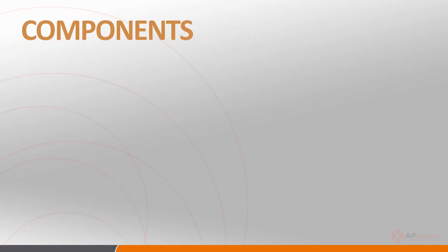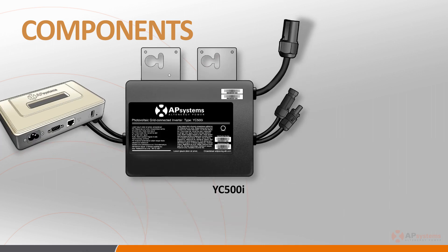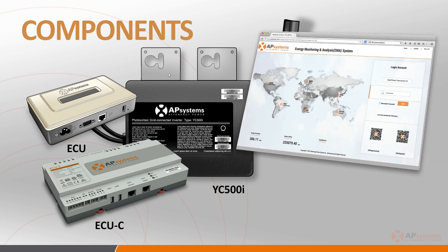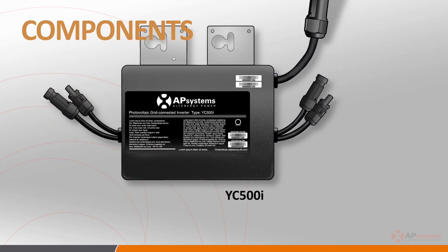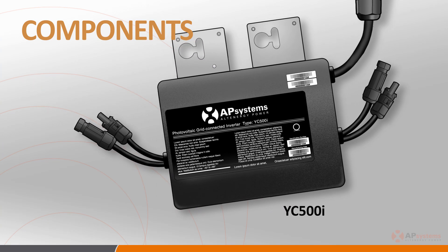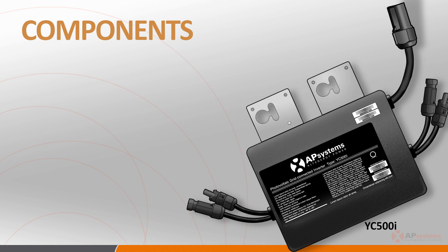There are three basic components that make up the AP Systems microinverter system: the inverter — in this case the YC500 — the Energy Communication Unit or ECU, and the Energy Monitoring and Analysis Website or EMA. The inverter's role in the array is to convert the DC power generated by the solar panel into AC power, which can be utilized by the power grid. The YC500 is a grid-tied microinverter.